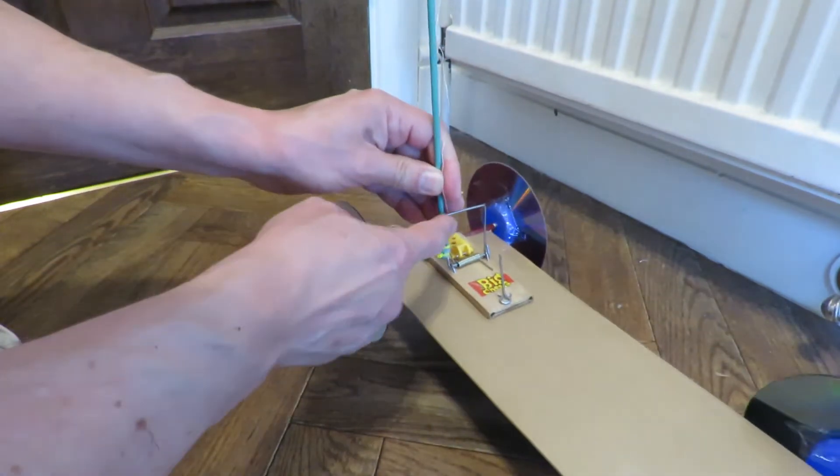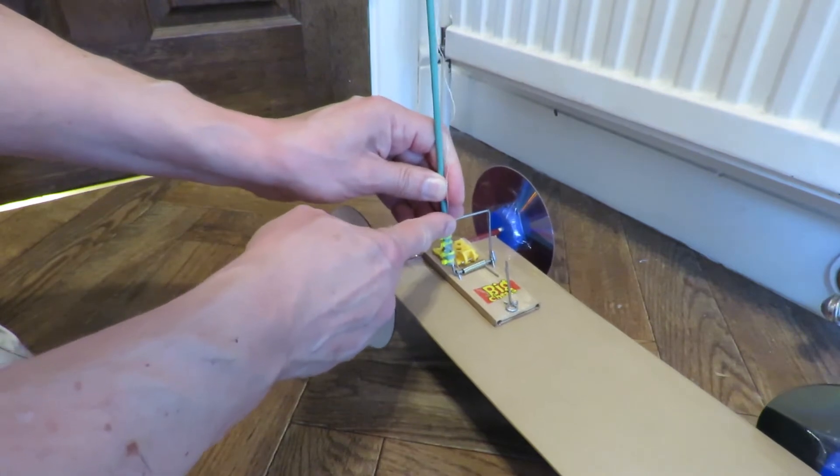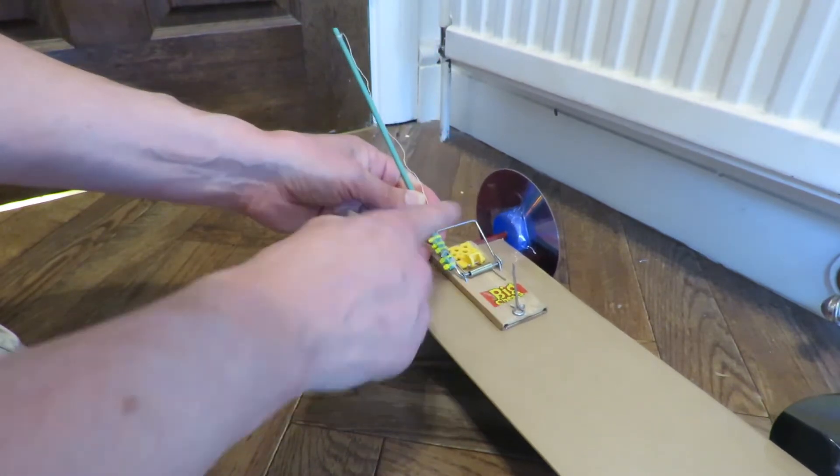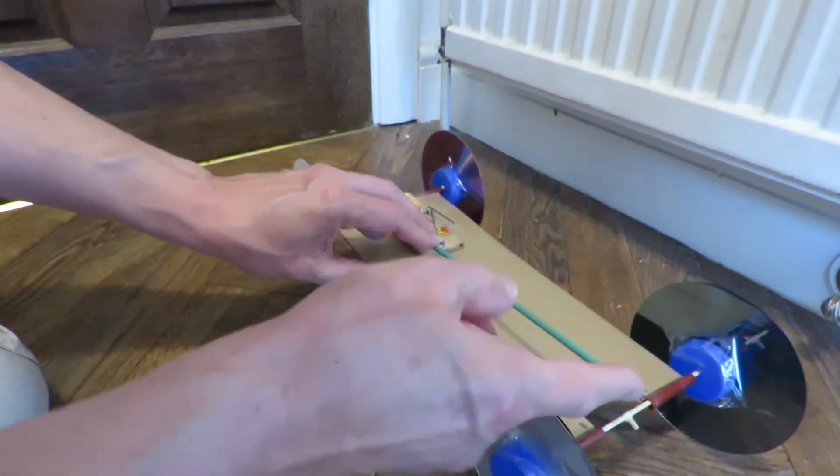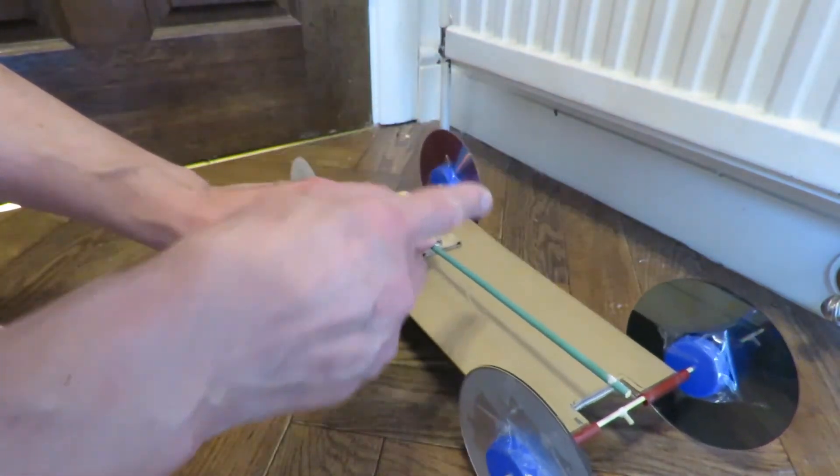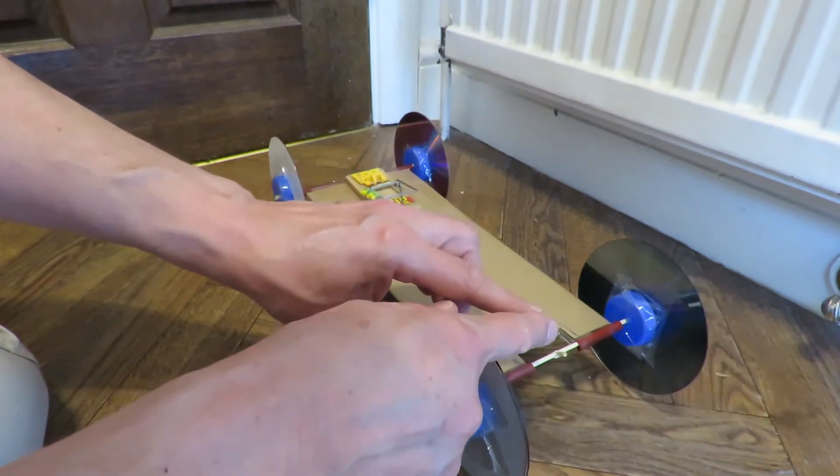But it's bad because it actually reduces the power here. If you just connected the string right here, you'd get a lot more power out of it, but you only get a short distance of movement. So most people put these levers on them to give more movement, but that reduces the power at this end.